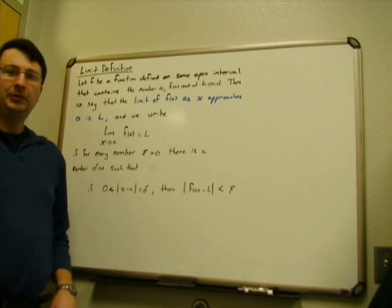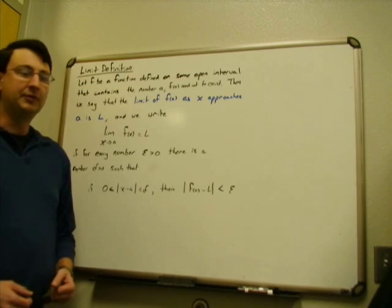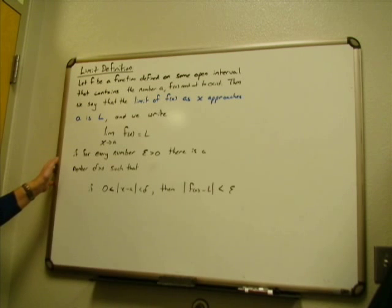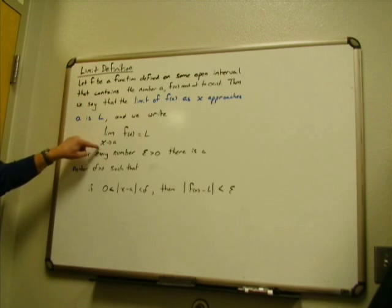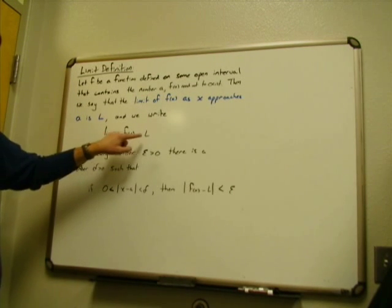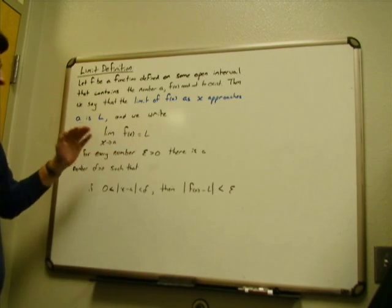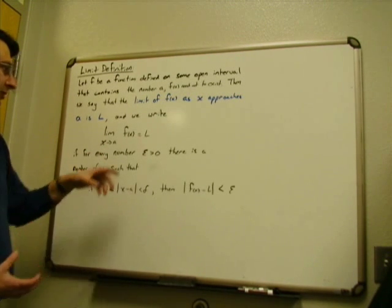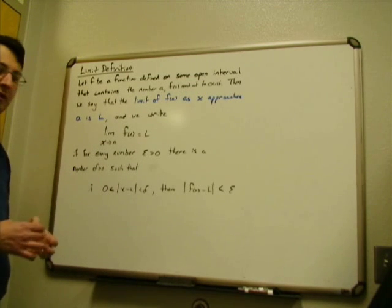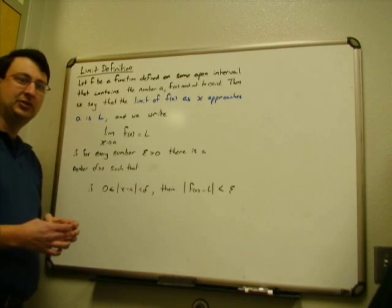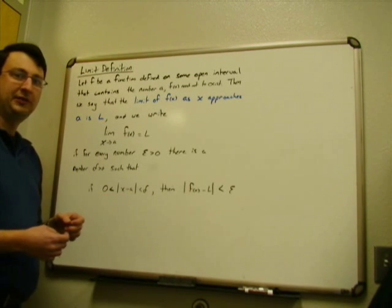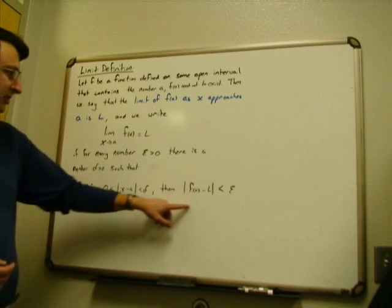We're going to take a look at a problem using the limit definition of a function. The general definition says that the limit as x approaches A of f(x) equals L is true if, for any error amount epsilon around the answer L, I can always find a band delta around x so that when I evaluate the function in that band, my output gets me within epsilon of L itself.